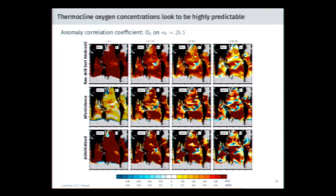What does that look like for oxygen? Again on the 26.5 isopycnal surface, I'm plotting anomaly correlations — a skill score for the model. Looking at oxygen in the thermocline, basically at a one-year lead all the way out in some cases to a near-decadal lead, we have high skill in predicting oxygen anomalies in the thermocline. That skill is robust — elevated over a persistence metric and elevated over an uninitialized ensemble which retains predictive skill simply from the forced response.